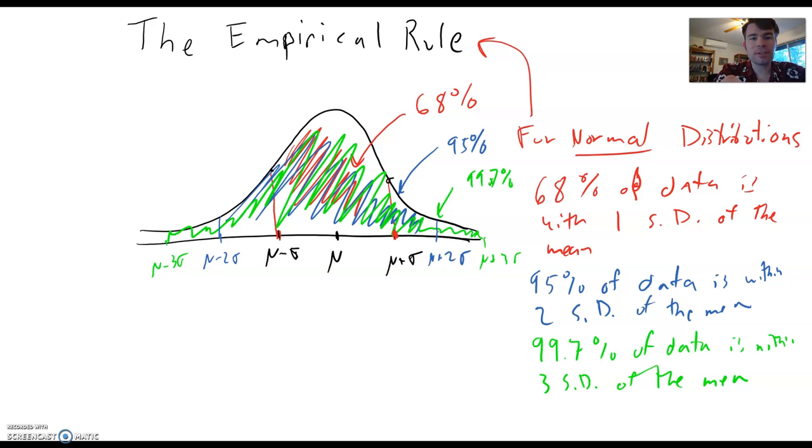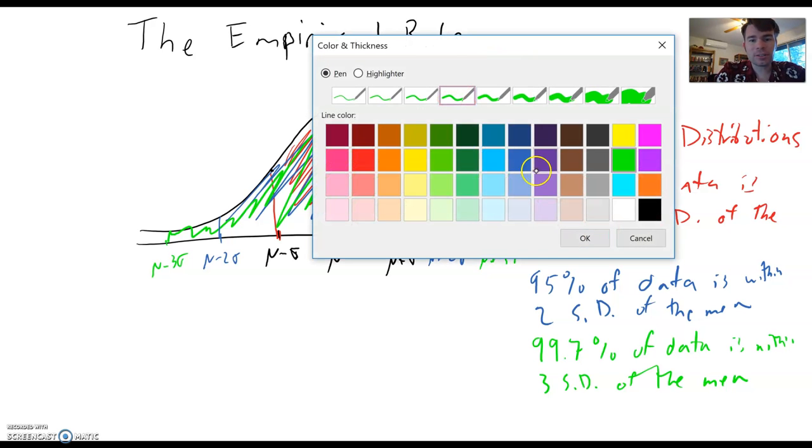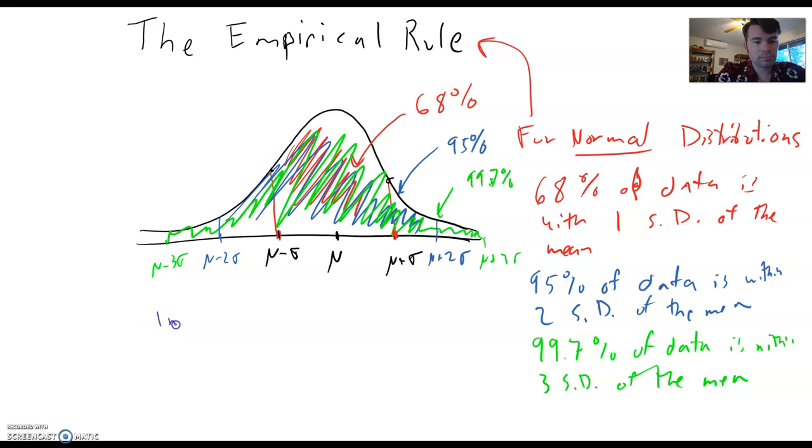Now, in terms of this picture, there's a couple of other things I want to look at. One of them is called an inflection point. And an inflection point is where a graph changes between being concave down and concave up. So in this case, that is an inflection point right there.